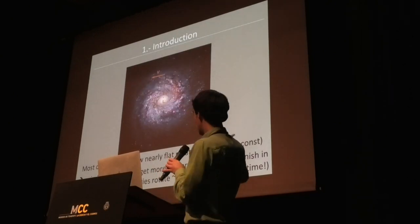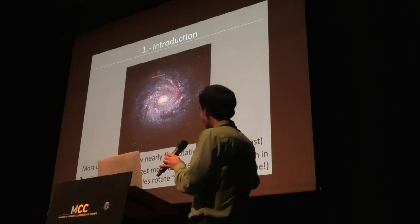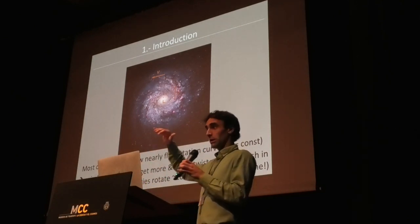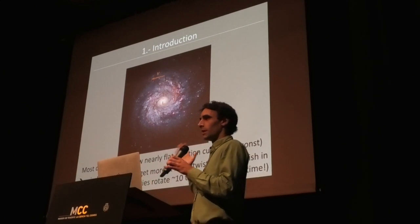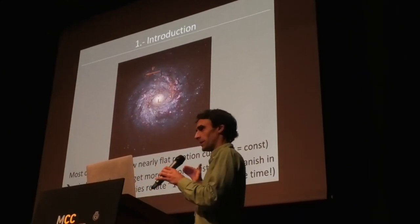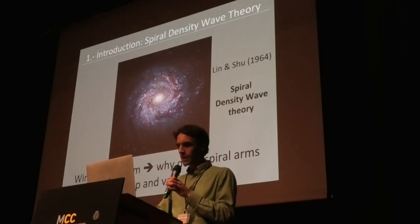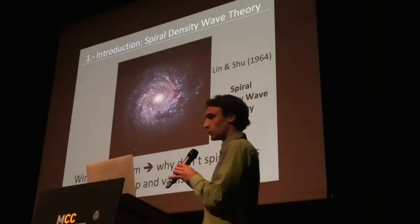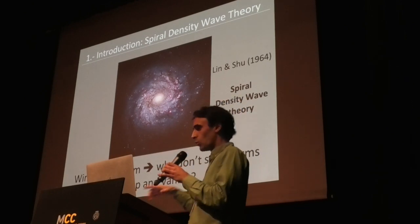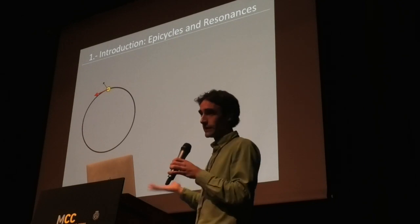I started with an introduction on how measurements show that rotation curves in galaxies are typically flat starting from a certain radius. That means linear velocity is roughly constant, and therefore angular velocity needs to become increasingly larger as we move towards the outskirts of galaxies. This is a bit paradoxical and would lead to the so-called winding problem — the spirals would become more and more tightly wound.